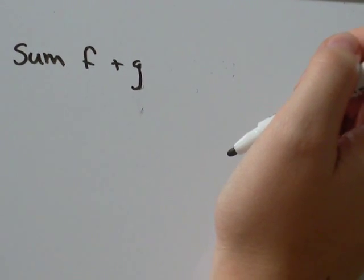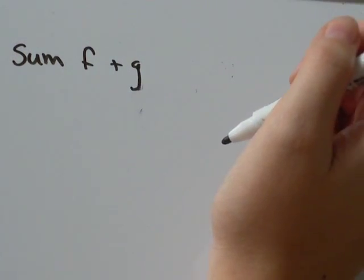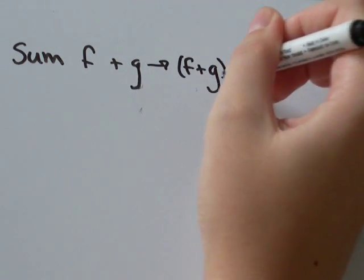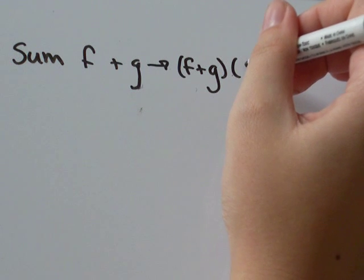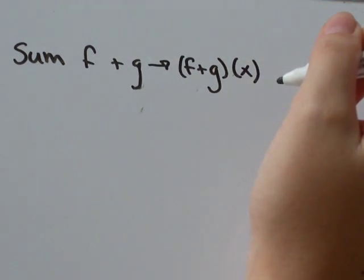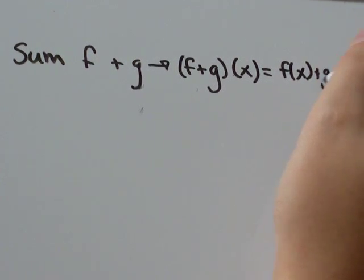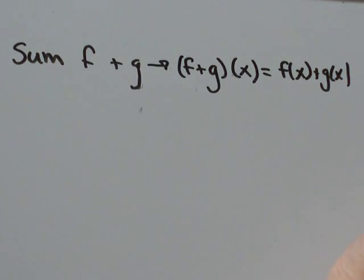I've got one function f, I've got another function g, and I want to add them together. You'll see that written as f plus g, and then in separate brackets, x equals f of x plus g of x. Let's do an example and talk about what that means.